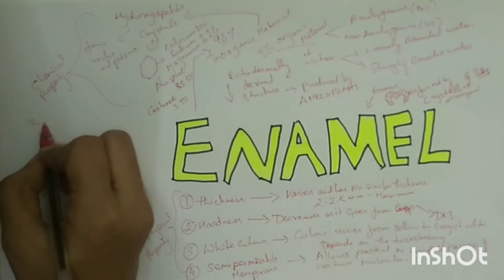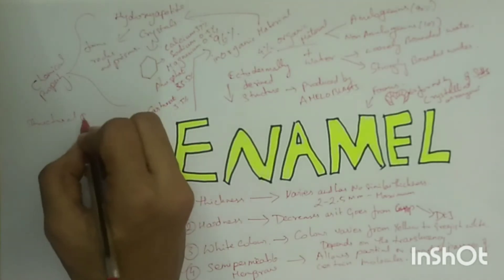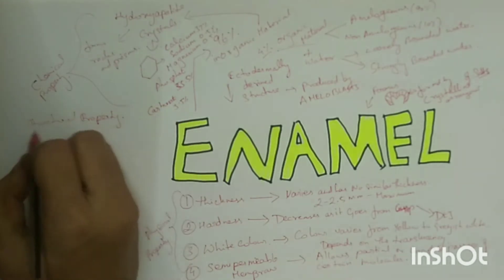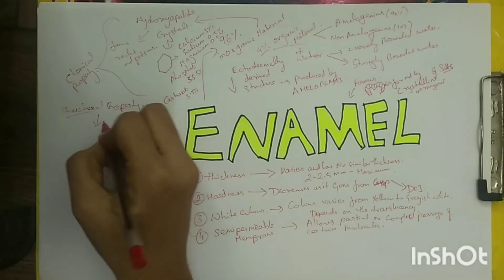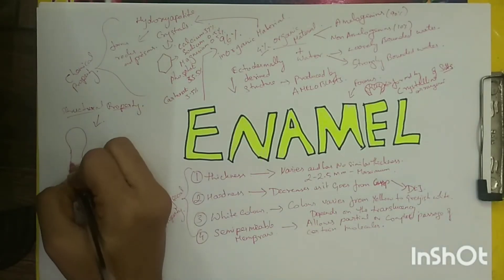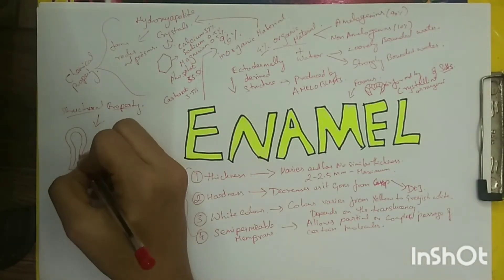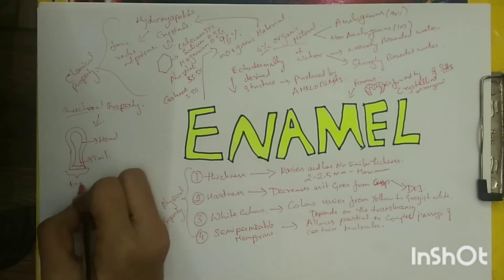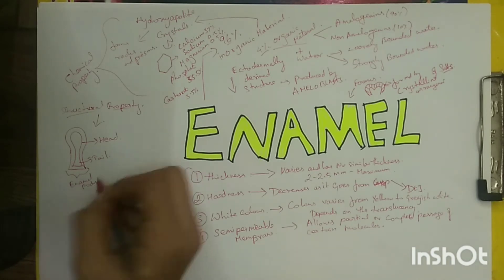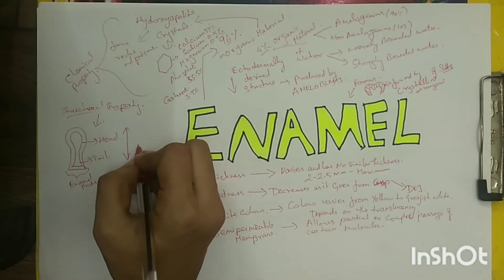Studies with electron microscope reveal that enamel rods have a keyhole or petal-shaped pattern with a rounded head and a narrow tail region. The rod measures about 4 to 5 nm in breadth and 9 nm in length.